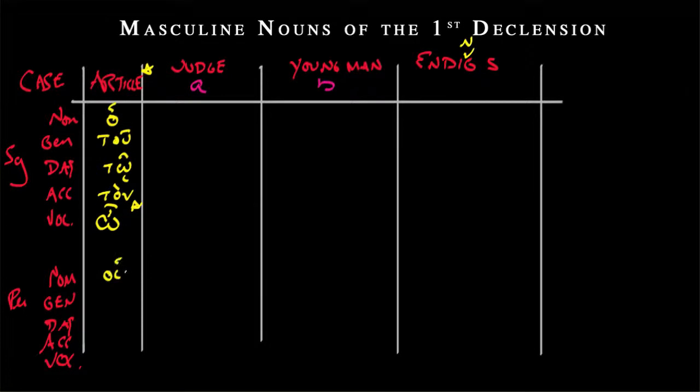And then in the plural, we had hoi. Again, proclitic starts with a vowel or diphthong. Ton. Tois. Tus. Again, I'll make that grave. And then again, o. No difference between singular and plural vocative. That's just the form.